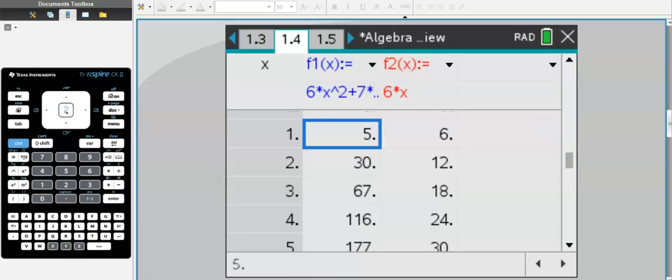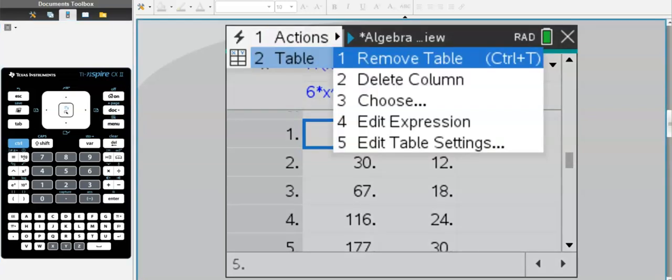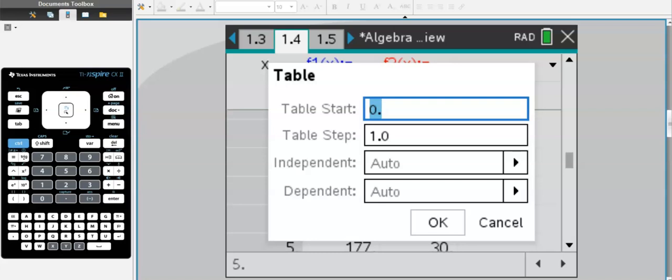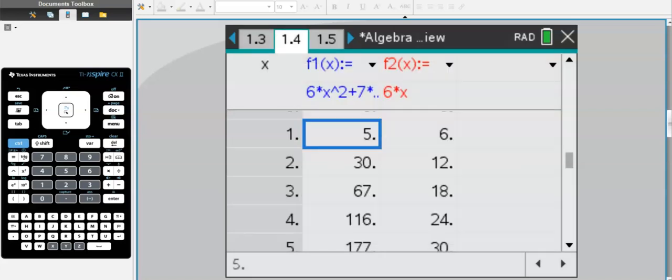Now if I go over here to 1.4, I have my own little table, and I can change the step by going to menu, table, and edit table settings. You can change where the table starts, and you can change where the table steps. The step is essentially how many x values it skips before it goes to a new one. If I change this to 0.5, then the values 1.5, 2.5, and 3.5 would show up on my table.